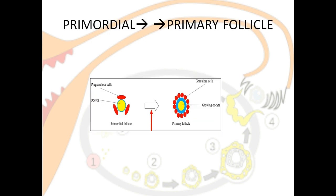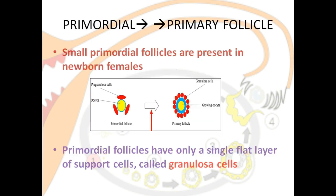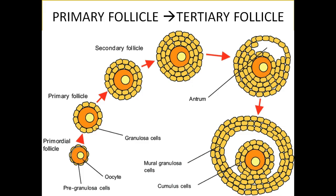The follicular story starts with small primordial follicles. These primordial follicles have a single layer of squamous tissue around them called granulosa cells, or supporting cells. Here is the full picture summarizing the whole process of folliculogenesis.